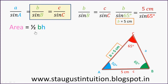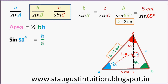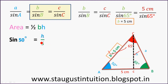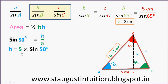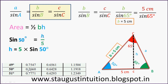Now we will see that Area equals half B H, perpendicular to the base, where H is the height. To find H, sin of 50 degrees equals opposite side over hypotenuse, which is H over 5. So H equals 5 into sin 50. Sin 50 from the table is 0.7660. Therefore H equals 5 into 0.7660.